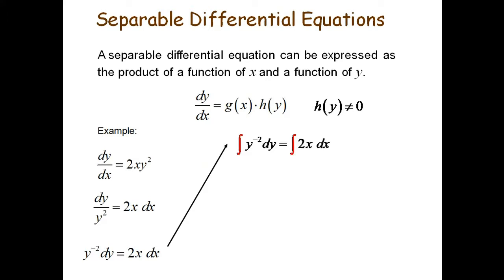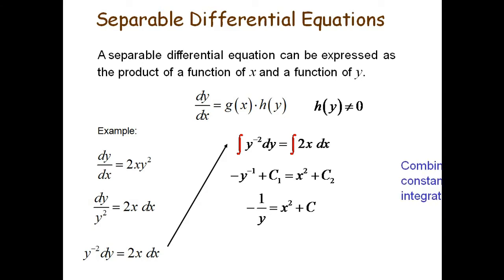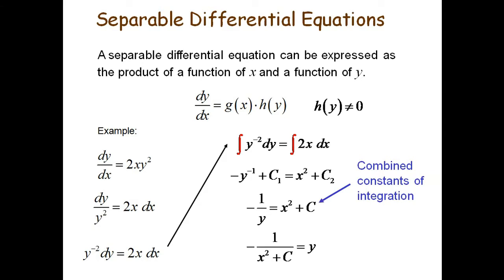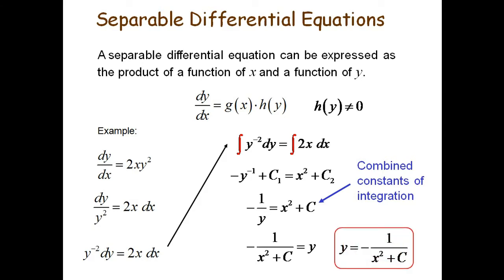Now we integrate both sides. By integrating, we can find two arbitrary constants c1 and c2, which we can write together as c. This c is called the combined constant of integration. So y equals 1 divided by negative x squared plus c. This is the solution of the differential equation.